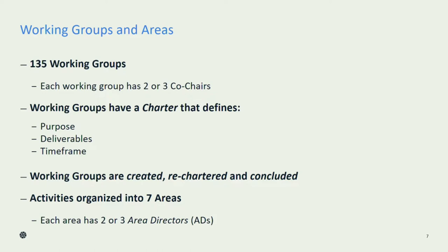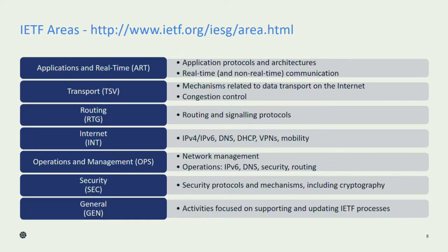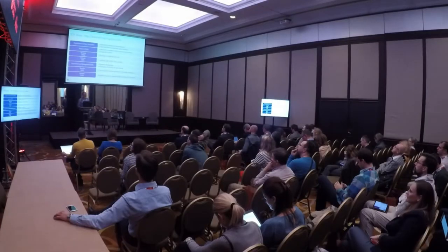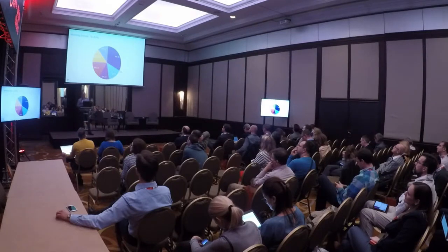Those activities and working groups are organised into seven areas, and those seven areas each have two or three area directors who have responsibility to supervise and coordinate the activities in their area. Applications and real-time has the most working groups. Then there are other areas like the internet area that covers IPv4, IPv6, and DNS — the things that underpin the functioning of the internet. There's also one general area which just has the one working group to discuss anything that people like to bring up.